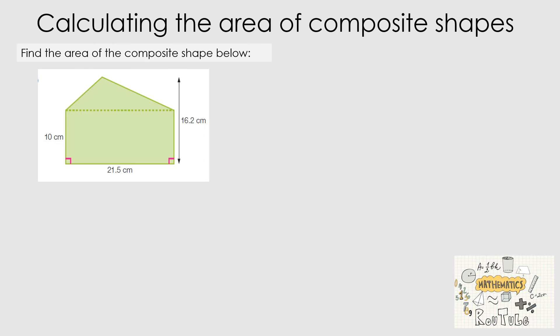Let's finish the video by calculating the area of a composite shape. A composite shape is a 2D shape made up of two or more shapes. Here we have a composite shape made up of a triangle on top and a rectangle below. When calculating the area of a composite shape, we break it into specific shapes — there is no single formula. We'll call the rectangle shape 1 and work out its area first.